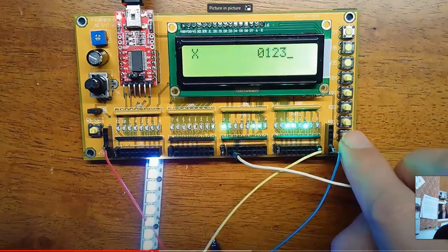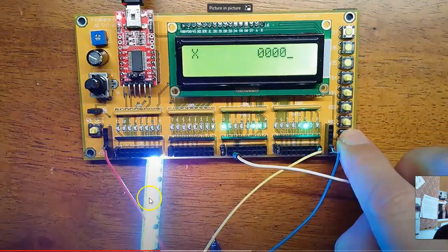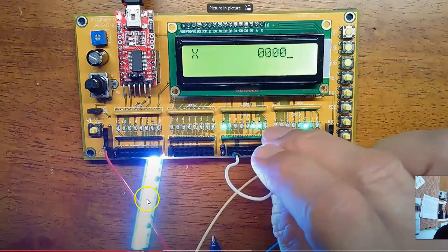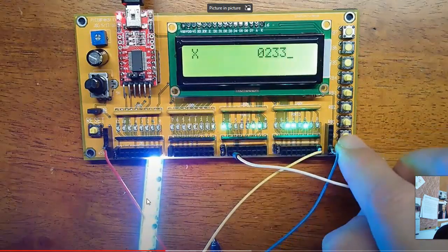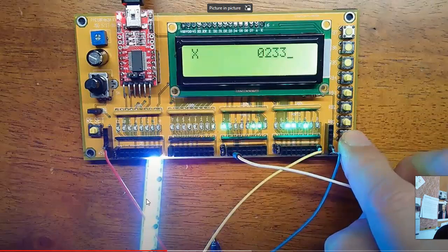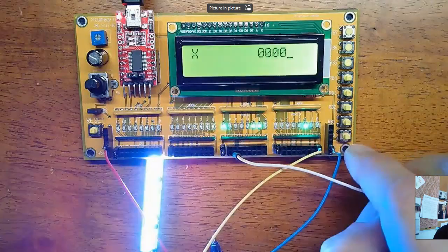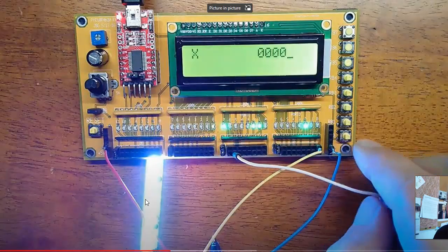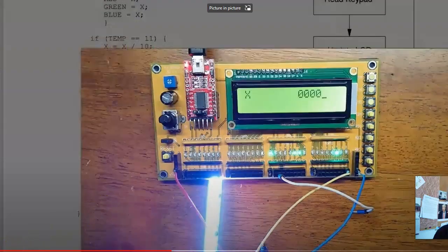Make the brightness 123. Now the NeoPixel is brighter. And put the number 233. It's really bright. So how do I do that?